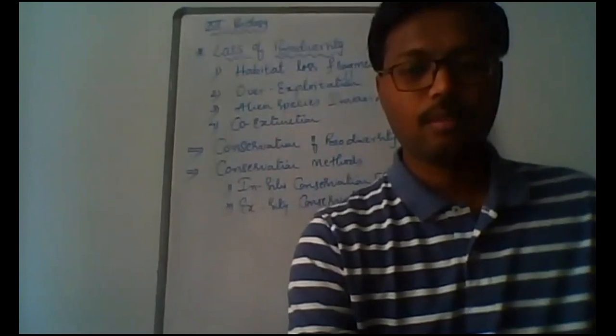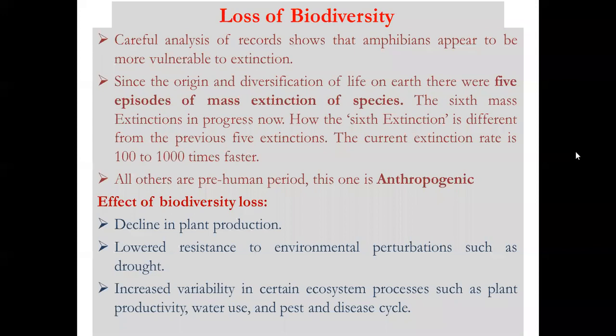Careful analysis of records shows that amphibians appear to be more vulnerable to extinction. Since the origin of Earth until now, there have been five episodes of mass extinction, where a huge number of animal and plant species went extinct. This is called mass extinction.